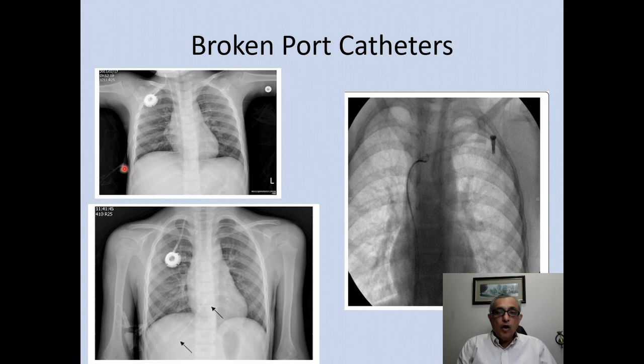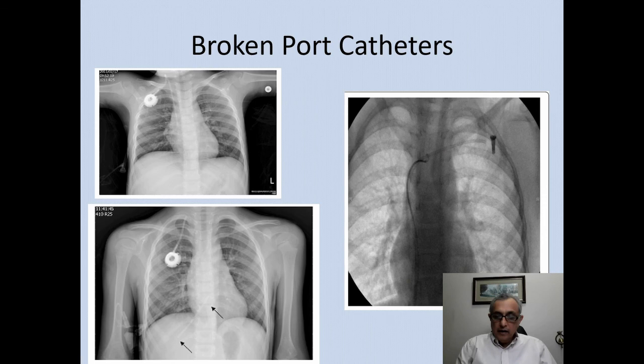Unfortunately, if ports are left for a long period of time they can break. Here is an example: the catheter has broken and the tip is lying within the IVC within the hepatic vein. To retrieve it, you go in through the inferior vena cava up to the heart, snare it, and remove it. If a port is no longer necessary, it is a good idea to take it out or monitor it, as it can break and dislodge.